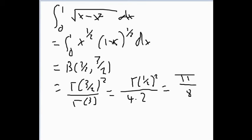Something to note: the function √(x - x²) does have an elementary antiderivative, so you could integrate normally and substitute the limits. But using the beta function is much shorter and much easier.